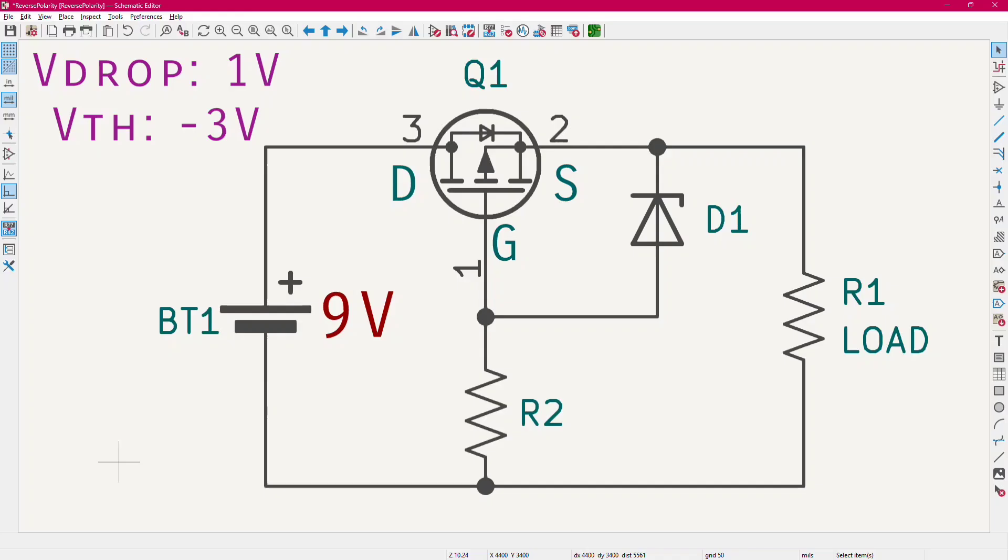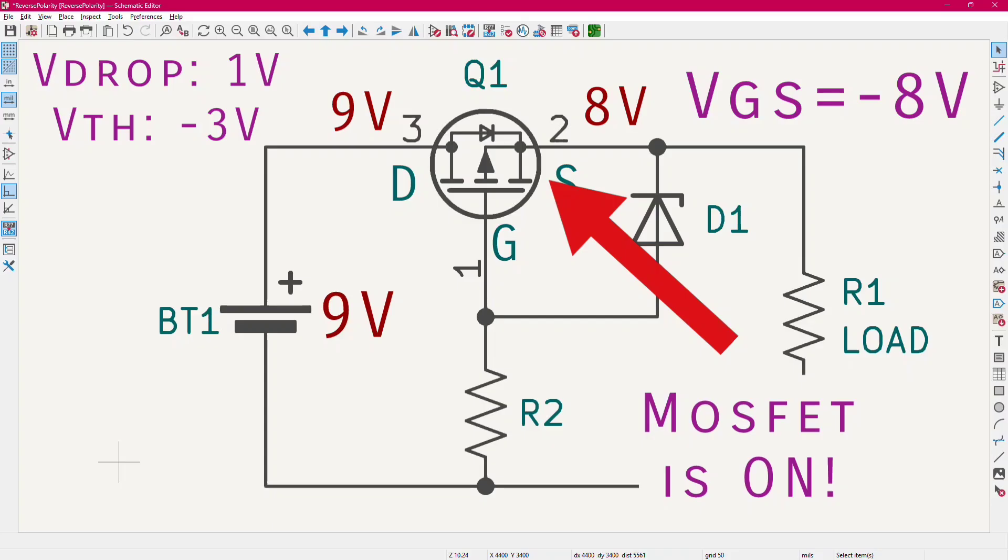This time to help you I will do an example. Let's first consider a 9V battery with a p-channel MOSFET that has a body diode drop of 1V and a threshold voltage of minus 3V. When the battery is connected correctly, we have 9V before the internal diode and 8V after that. And since the gate is tied to ground, the VGS voltage is now minus 8V, which is lower than our minus 3V. And so our MOSFET turns fully on and we can forget about the internal diode.